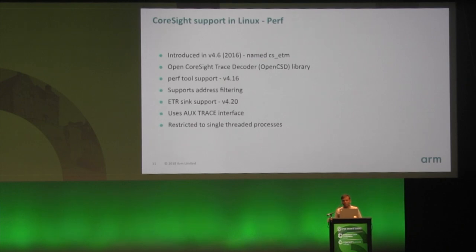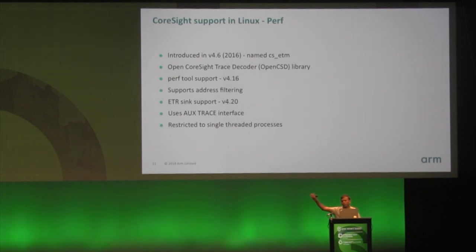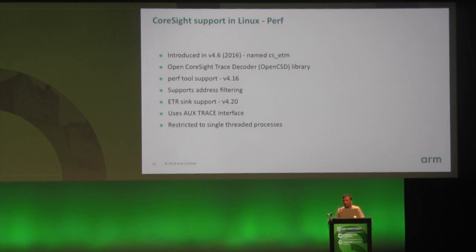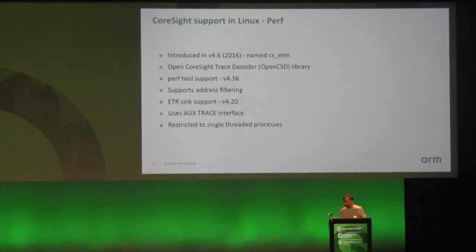It uses the auxiliary trace infrastructure provided by the Perf subsystem, where the user can provide a set of pages which can be filled in by the hardware and be part of the sample generated in Perf. Currently it's only restricted to tracing a single-threaded application, mainly due to topology and other issues with Perf, which will be covered in the coming slides.